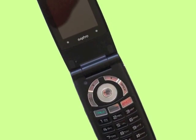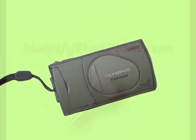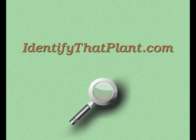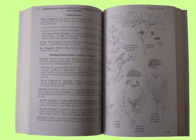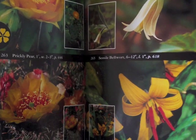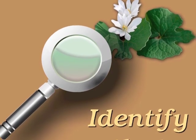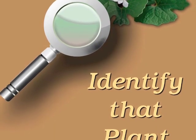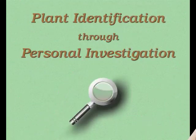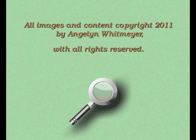Have you taken photos to identify plants? Which of these tips do you anticipate practicing the next time you shoot a photo of an unknown plant? I invite you to respond at identifythatplant.com. Look for the blog post titled Using Photography for Plant Identification. The next podcast discusses the type of key you may find in a field guide and how to use that key. Visit identifythatplant.com for more plant identification resources and information about how you can confidently master these skills of correct plant identification. You've been watching Plant Identification Through Personal Investigation with Angelyn Whitmire.